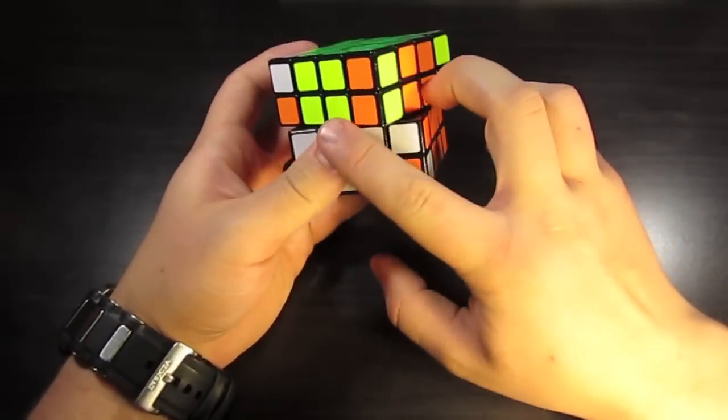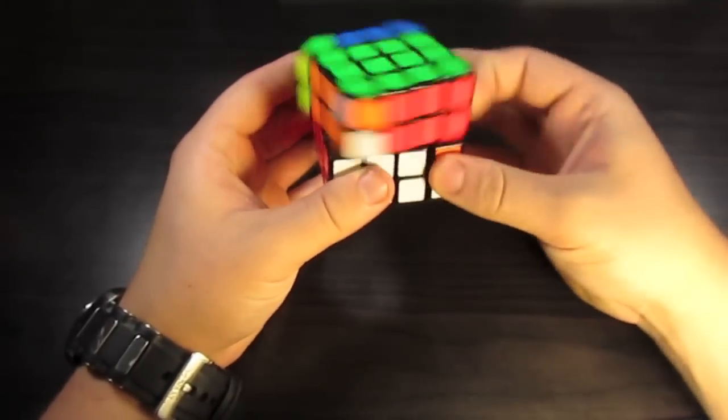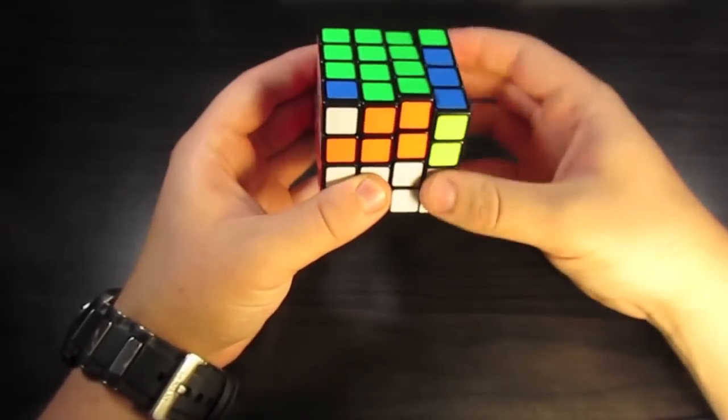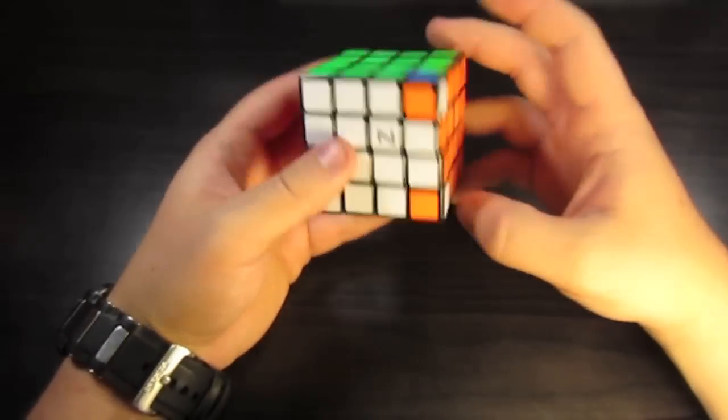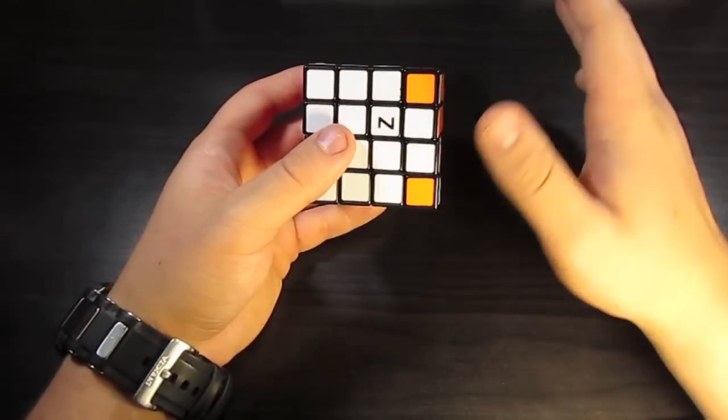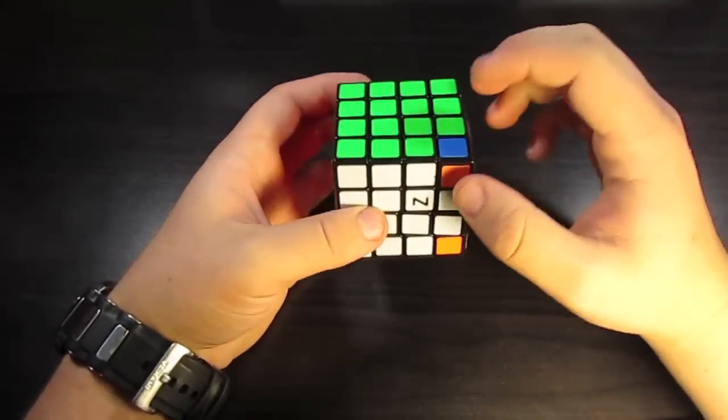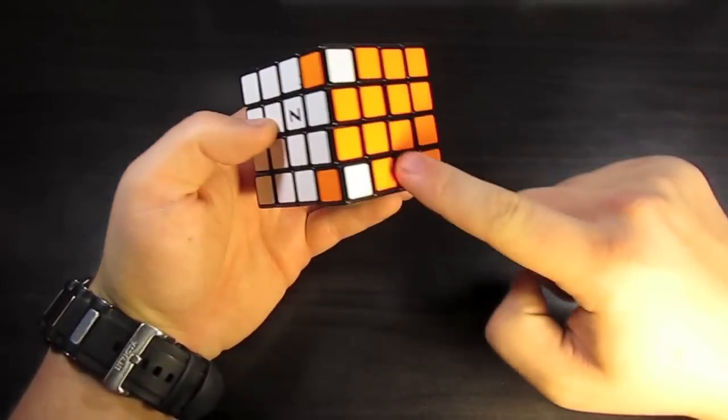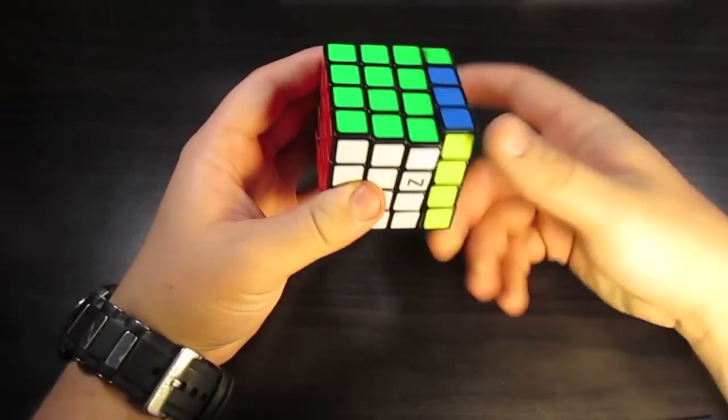And then, these two here can be switched. And now, we just have, I'm still using, still solving it as a cuboid, this blue corner can go right down here, since the orange is opposite, the white is opposite, using the same algorithm.